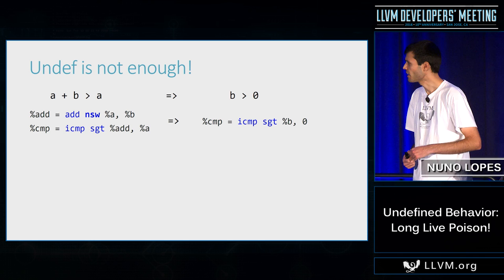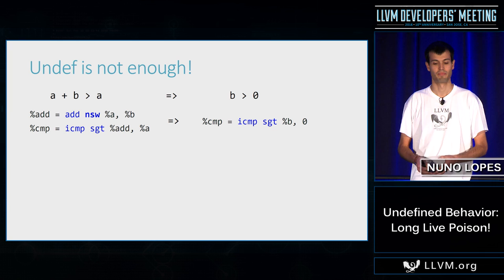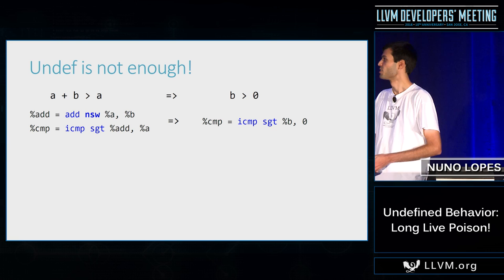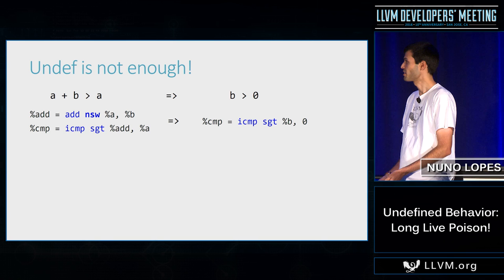The IR we get is marked NSW — no signed wrap — which means we don't actually care what add returns if it overflows. But we need to define what 'we don't care' means. One approach would be: NSW returns undef if it overflows. Let's try that.